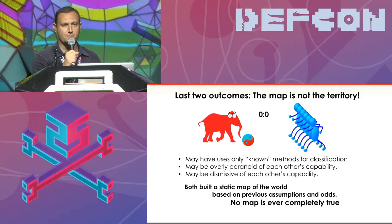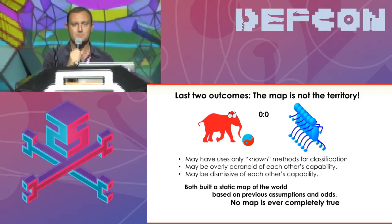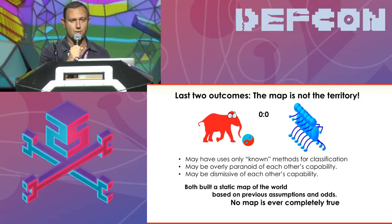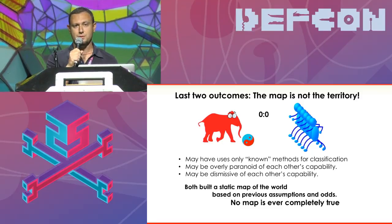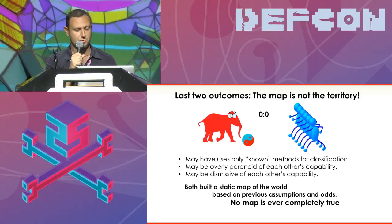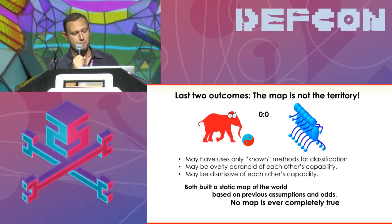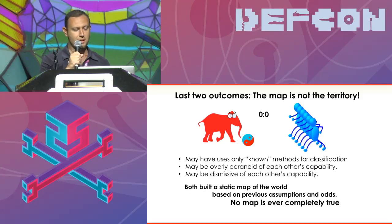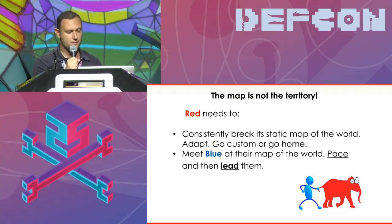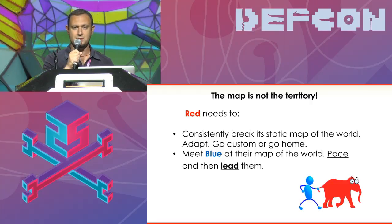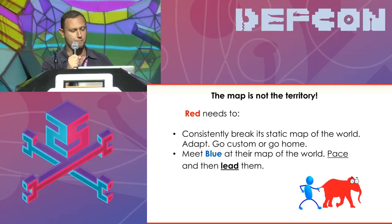The last two outcomes — safe positive and safe negative — are good, but we're still not achieving our goal. The one thing that both blue and red team need to understand is that the map they've built by using their sensory perception is not the territory. We've all used our known methods of classification of either party, but we may be overly paranoid of their capabilities or dismissive of their capabilities. Both build a static map of the world, but the map is not completely true all the time. What red needs to do is consistently break the static map of the defense and their own, and we need to meet the blue team at their map of the world — the concept of pacing and leading.